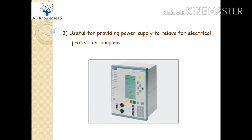The third use is providing power supply to relays for electrical protection purposes. DC power supply is used here because in case AC power supply fails, power must still be available for protection purposes — including under-voltage and under-frequency protections. The relay power supply is generally provided in normal conditions from battery chargers, which are supplied from AC power. In case AC power fails, the battery bank comes into line and provides power supply to these numerical relays.